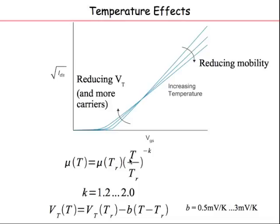From a modeling standpoint, mobility depends on temperature as mu0·(T/Tr)^(-k), where k is between 1 and 2, and threshold voltage can be linearized as Vt(Tr) minus v·(T - Tr), where v is about 0.5 to 3 mV/°C. The current is proportional to mu times VGT to the alpha power. So at high gate overdrive (high VGS), increasing temperature reduces mobility significantly while VGT = VGS - Vt increases only a little. The mobility degradation dominates, so current decreases with temperature at high supply voltages.